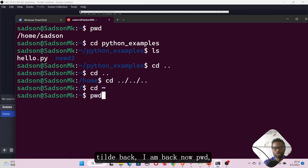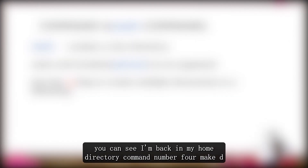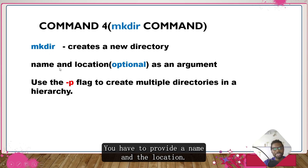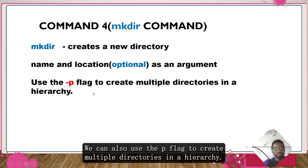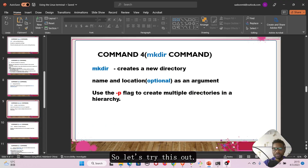Command number four is mkdir, which stands for 'make directory' — it creates a new directory. You have to provide the name and, optionally, the location as an argument. We can also use the -p flag to create multiple directories in a hierarchy.